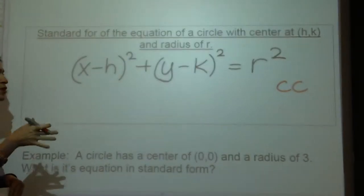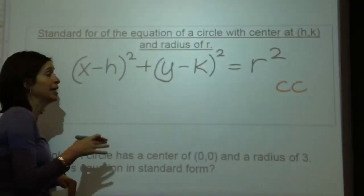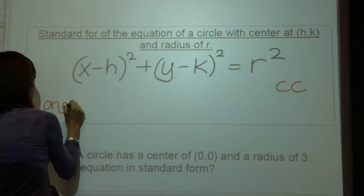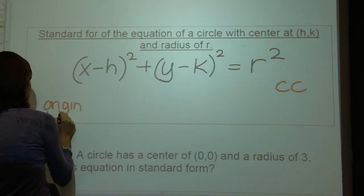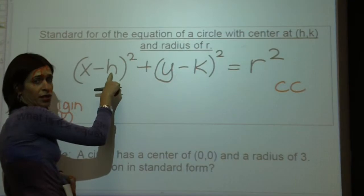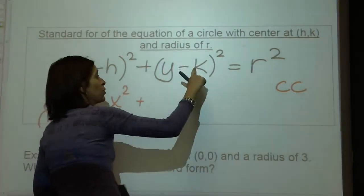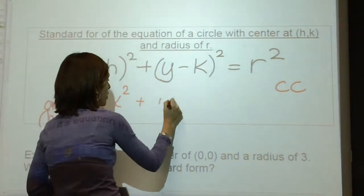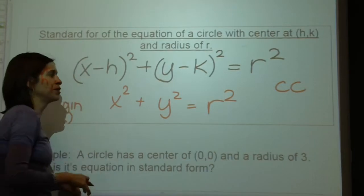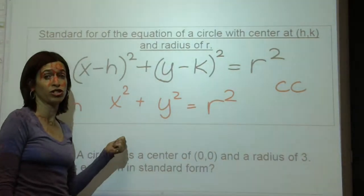So how are we going to use it? What if the center was the origin? If the center was the origin, h and k is (0, 0), then it would be x minus 0 — which is just x squared — plus y minus 0 — which is just y squared — equals r squared. So when you see a circle in this form, it's actually easier because right off the bat you can tell me that the origin is the center.